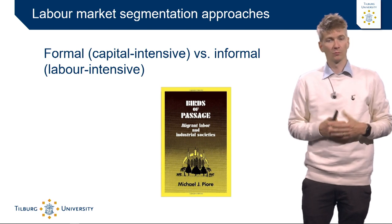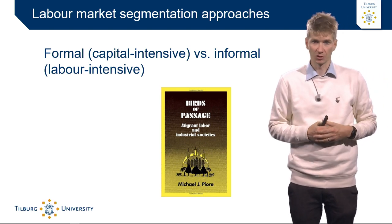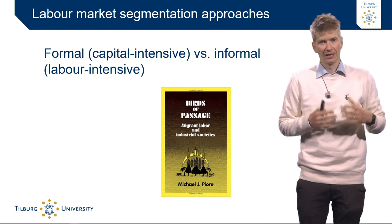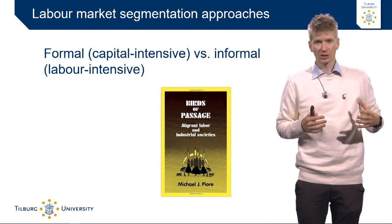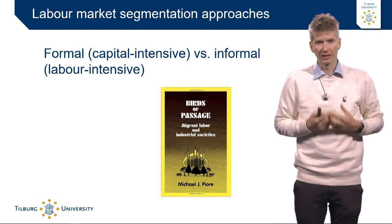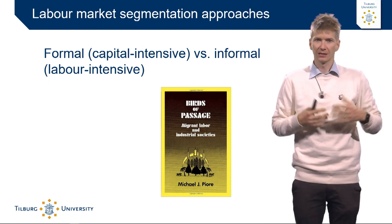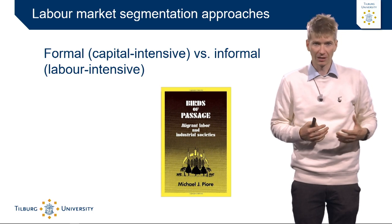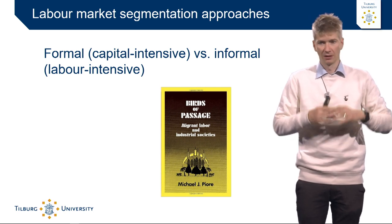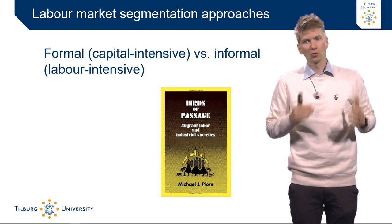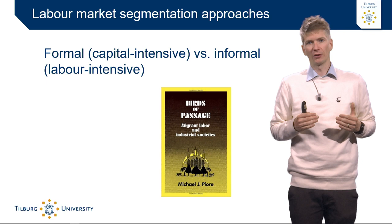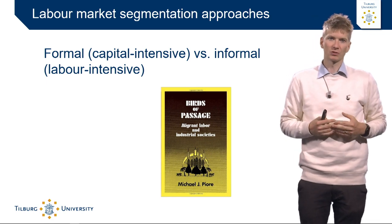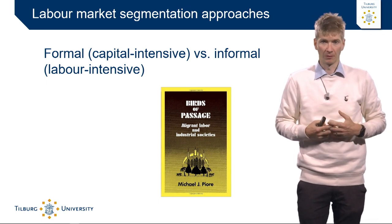Then you have Michael Piore, who wrote a book called "Birds of Passage," published in 1979. He indicated that the segmented labour market idea is applicable to international migration, because the local population very often is not willing to do the jobs in the secondary segment anymore.